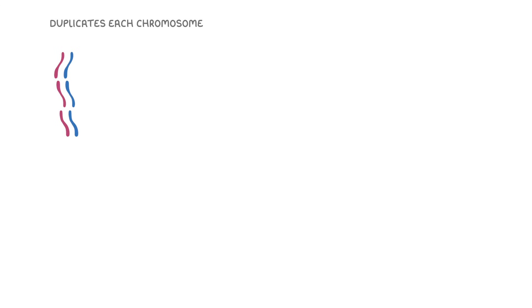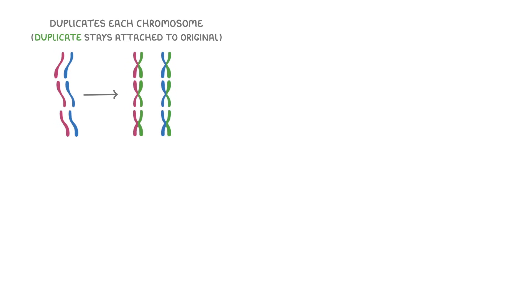As the cell continues to prepare for division, it duplicates each of the 46 chromosomes, but the duplicate stays attached to the original chromosome that it was copied from, so that together they form an X shape. Notice that each chromosome is coloured half green. This is to highlight the fact that the right half of each chromosome is a duplicate of the left half that we started with. You might sometimes hear each half referred to as an arm. The result is that the DNA on the right arm of each X-shaped chromosome is the same as the DNA on the left arm of that chromosome.